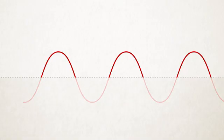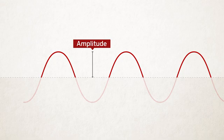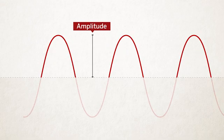Amplitude is the height of the wave from the middle of the wave to the top of a peak. It is a measure of how tall the wave is. An amplitude can be big or it can be small.